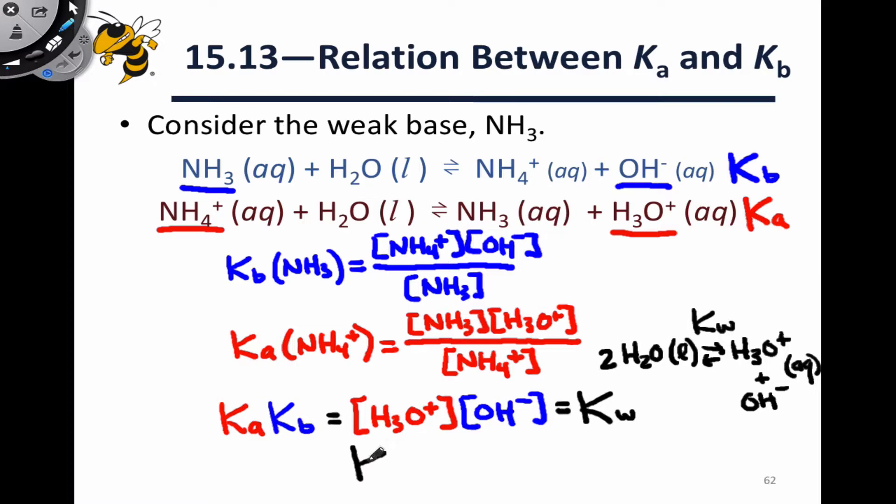So this is pretty neat. We've shown, at least for this example, that the product of Ka for an acid and Kb for the conjugate base, which here I'll write as HA and A-, but we derived it for a positive acid and a neutral conjugate base, it's equally valid in both cases, is equal to Kw, which at 25 degrees C is equal to 10 to the negative 14. This means that given a Ka, we can go to Kb for the conjugate base, given a Kb, we can go to Ka for the conjugate acid.